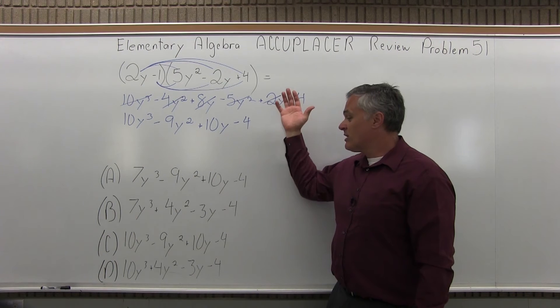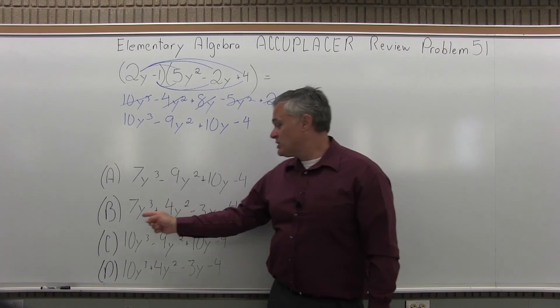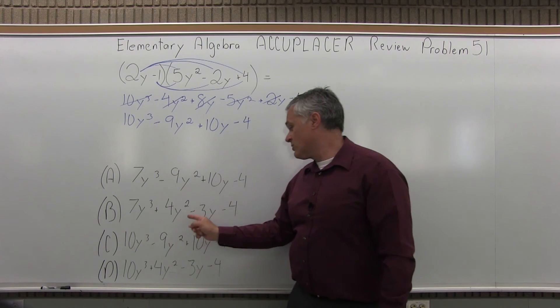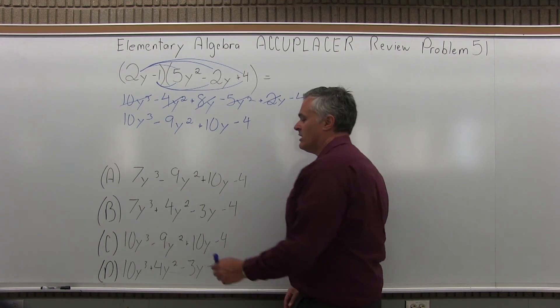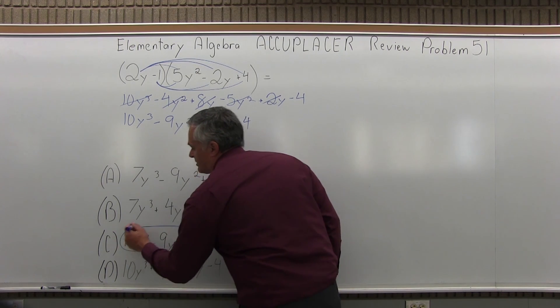As I look at my four possible options, option C is an exact match: 10y to the third minus 9y squared plus 10y minus 4. So the answer to problem number 51 is option C.